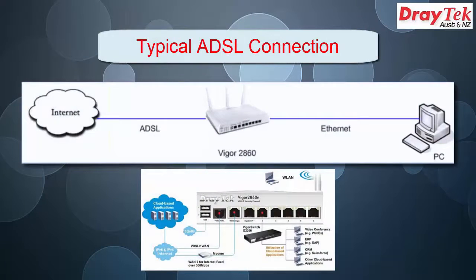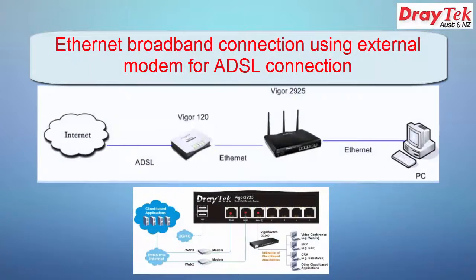The Vigor2860 is a dual WAN router with a built-in ADSL modem. The ADSL line will be plugged directly into the VDSL/ADSL port. The Vigor2925 broadband router has two Gigabit WAN interfaces. It will require an external ADSL modem such as the Vigor120, which will then be connected to the router's Gigabit Internet 1 interface.